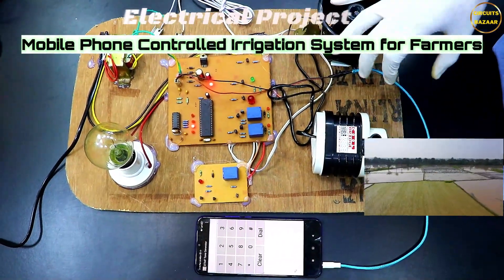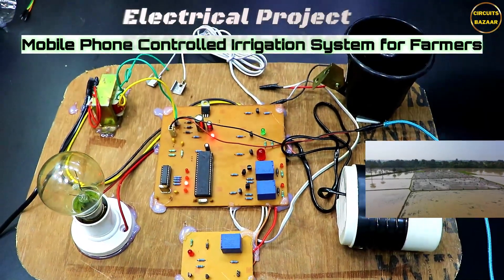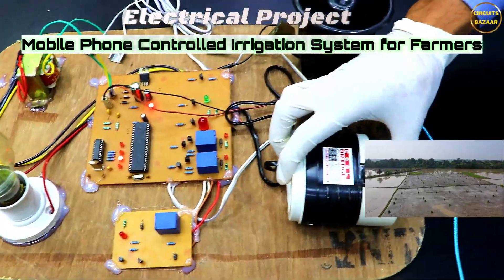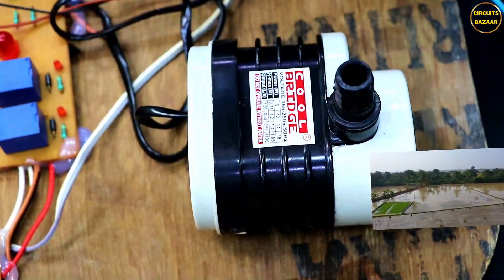Hello friends, this is a mobile phone controlled irrigation system. In this project we are going to ease the life of the farmer. This is the water pump, so the farmer can control this water pump from anywhere in the world. For the demo purpose we are using this small motor, but you can use a big motor as well.